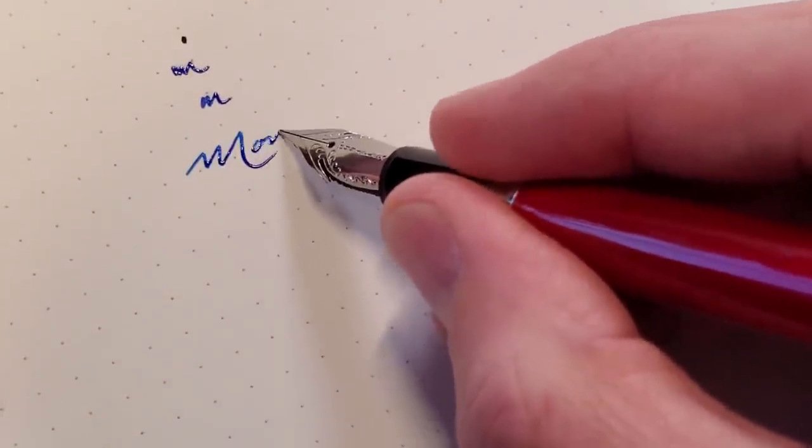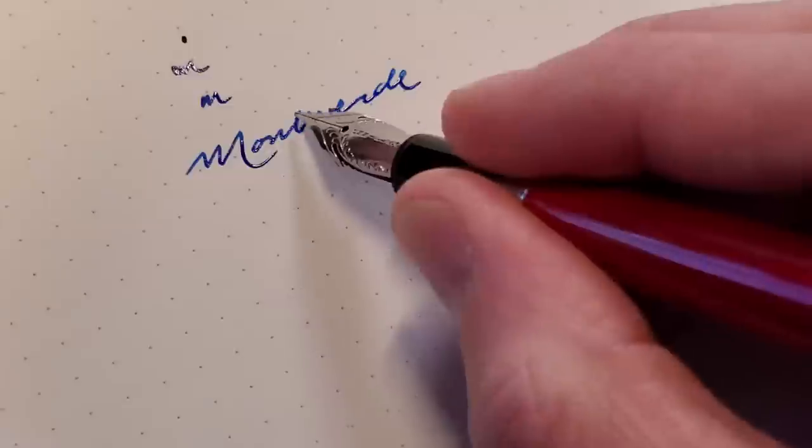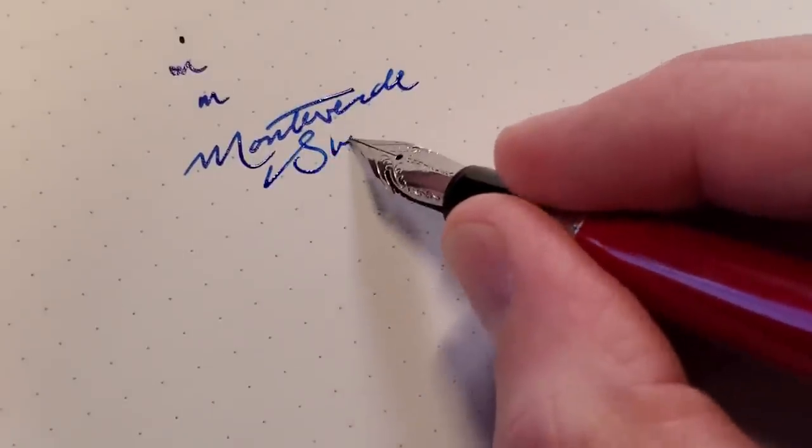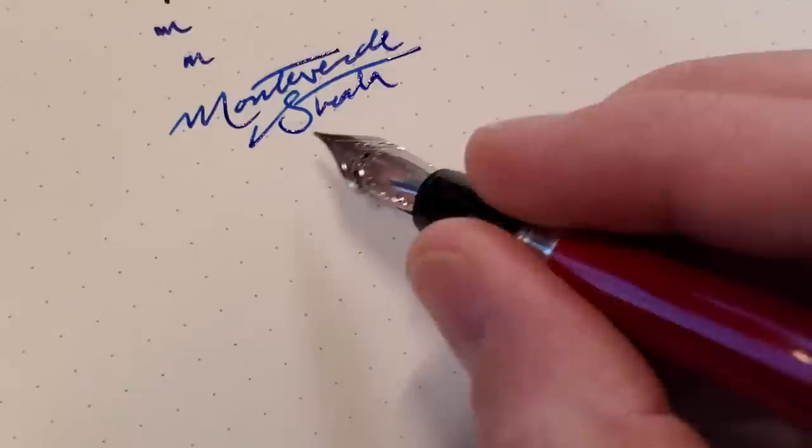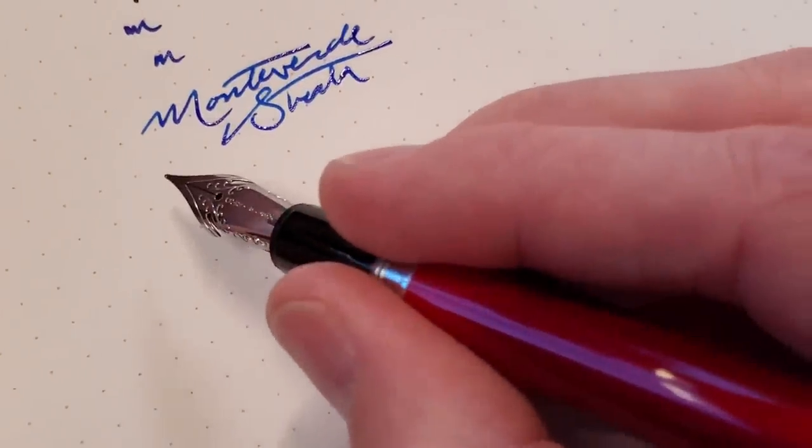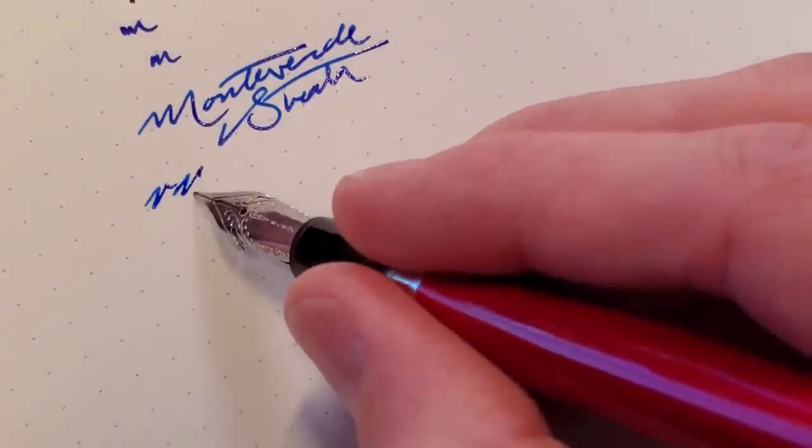So I'm right now writing with the Monteverde Strata. Standard writing, no big deal there. It's kind of like a medium fine line. They only come in one size, and it's this.